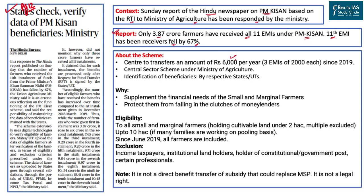PM Kisan is a scheme where 6,000 rupees per year is transferred to farmers in three installments of 2,000 each. Launched in 2019 as a central sector scheme, the entire funding comes from the Ministry of Agriculture under the central government. The identification of beneficiaries lies with the states and union territories because agriculture is a state subject, and all data on land allocation and ownership lies with the respective states.